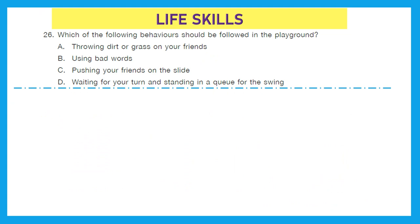Moving to the third section, that is Life Skills. Question 26: Which of the following behaviors should be followed in the playground? Throwing dirt on friends — no. Using bad words — not at all. Pushing friends on the slide — no. Option D, waiting for your turn and standing in a queue for the swing, is the good behavior. Option D is the right answer.